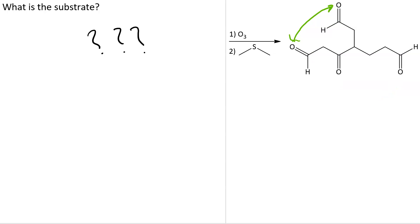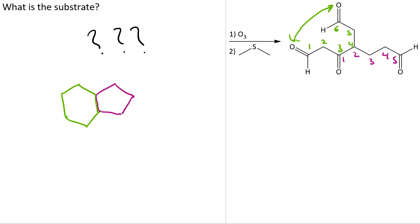Since we've only got one molecule in the product, it's bicyclic. I'm going to number so I can see how many carbons I have in each ring — that's a six-membered ring — and also number for the other one: a five-membered ring. So I've drawn on the left a six-membered ring sharing a side with a five-membered ring, and that shared side is highlighted. Carbons three and four correspond to one and two.